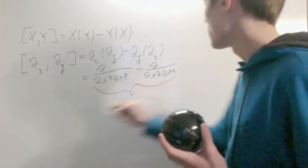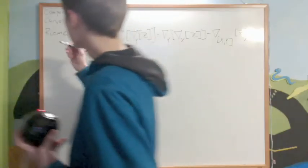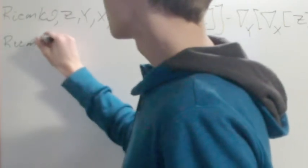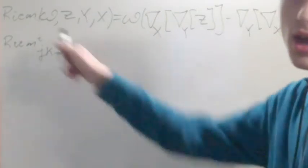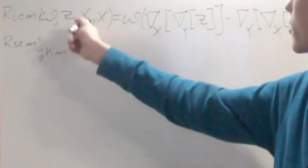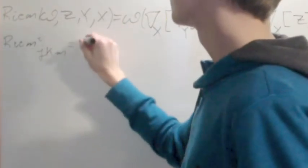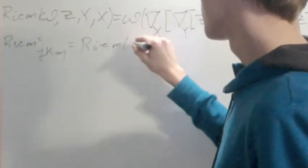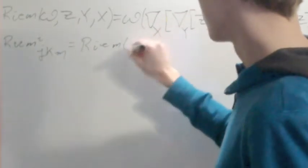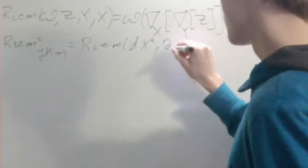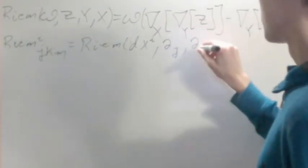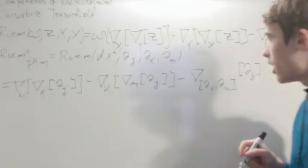So that means that Riemannian I, J, K, M - I for that, J for that, K for that, and that - is going to be equal to Riemannian of del of the DX I, del J, del K, del M.